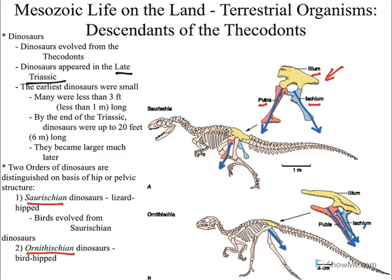Saurischians are called Lizard-Hipped because modern lizards have this hip structure, and Ornithischians are called Bird-Hipped because modern birds have this structure. Now, this is where it can get a little confusing. Dinosaurs were named long before we had any idea that birds actually evolved from dinosaurs. The paleontologist did the right thing by noting the Bird-Hipped correlation. However, as it turns out, birds evolved from Saurischian dinosaurs. So even though Ornithischians are Bird-Hipped, birds don't evolve from them — birds evolved from the Saurischian dinosaurs.